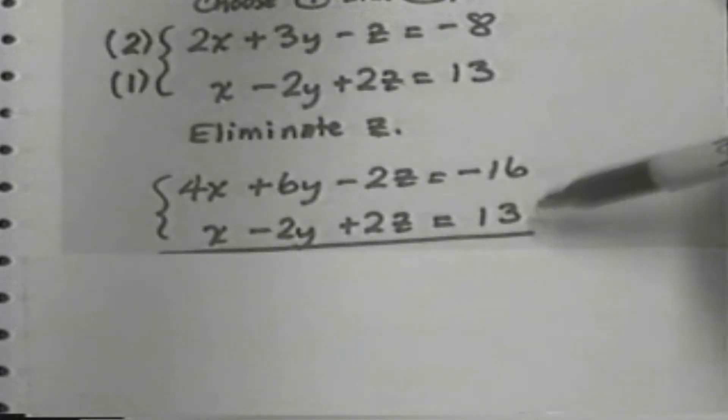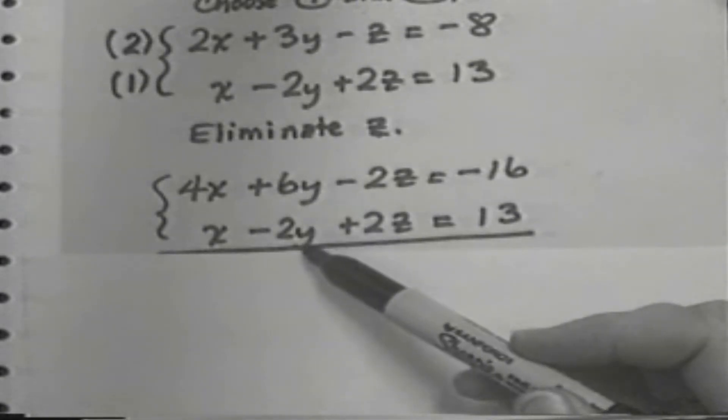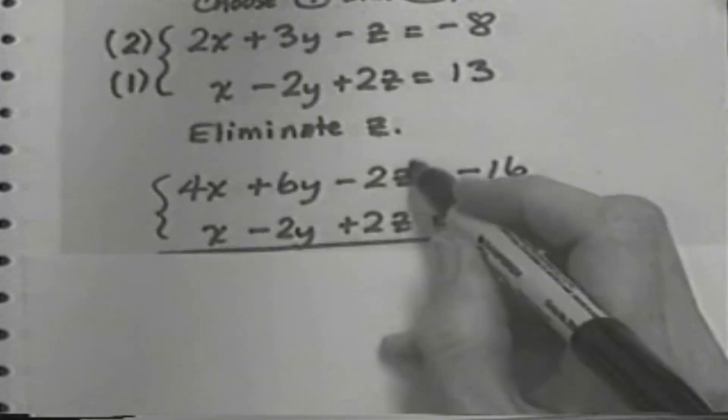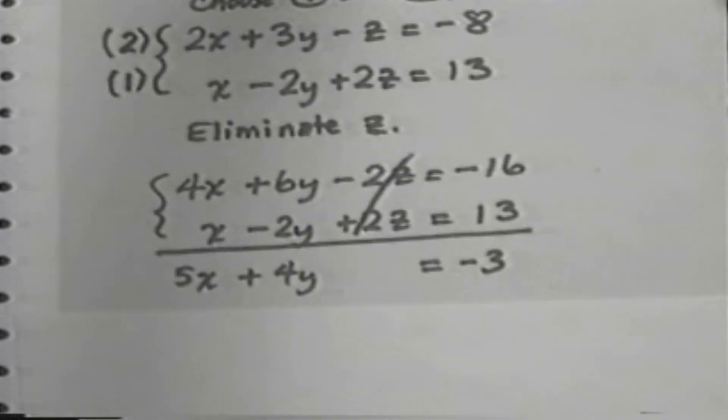Now when I add the equations, I get 5x plus 4y. The z's cancel, and that's the way it's been set up, equals negative 3.